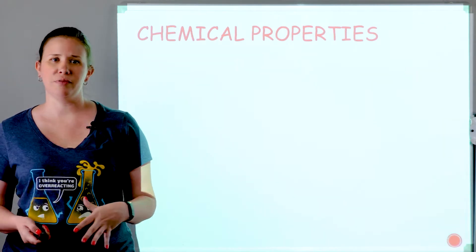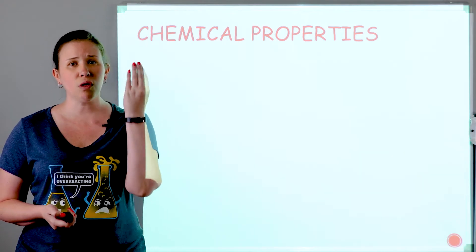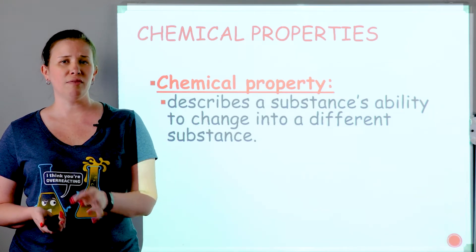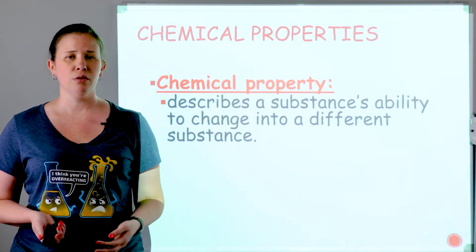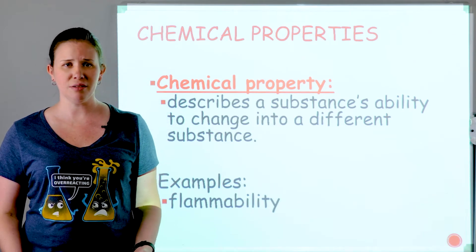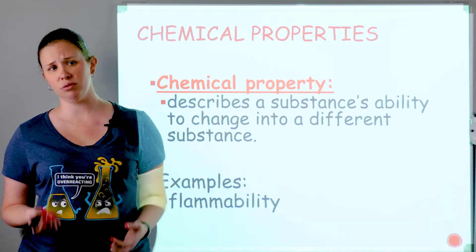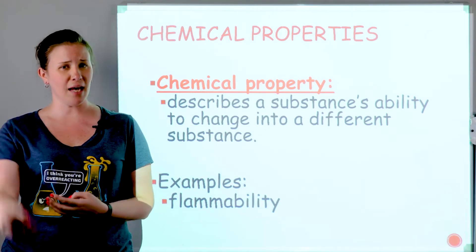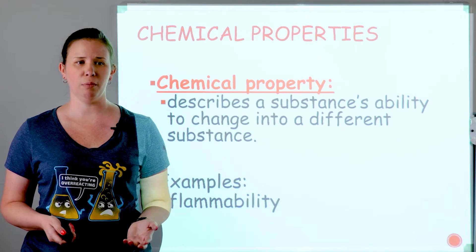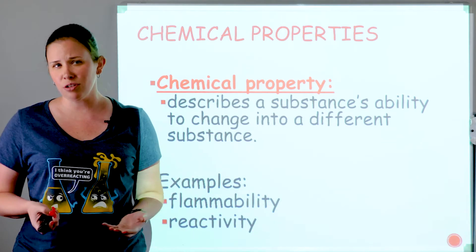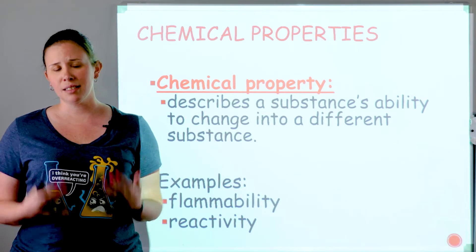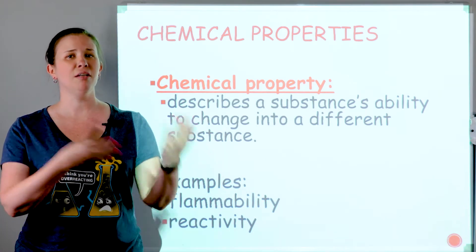Now let's get into the chemical realm. A chemical property would require a change in the identity of the substance. In order to observe a chemical property, you have to change one thing into another. For example, knowing how flammable something is — once you set something on fire, there's enough energy to catalyze a chemical change. Any indication of how reactive a substance is, how likely it is to react with one substance or another, is an idea of a chemical property — how something will behave chemically.